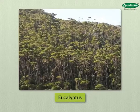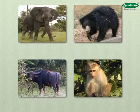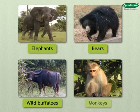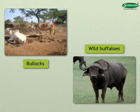Animals found in the forest are elephants, bears, wild buffaloes, monkeys, etc. Bullocks and wild buffaloes are useful for working on the farms, and elephants are used for carrying logs.